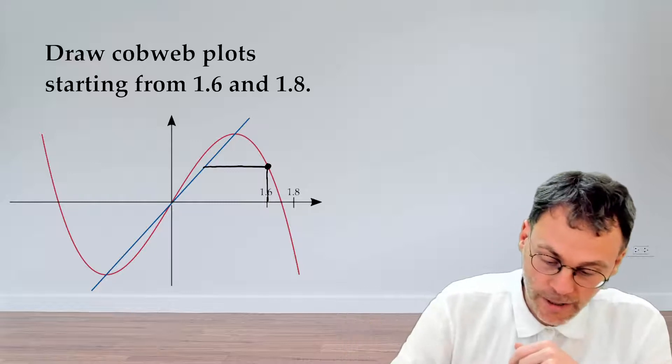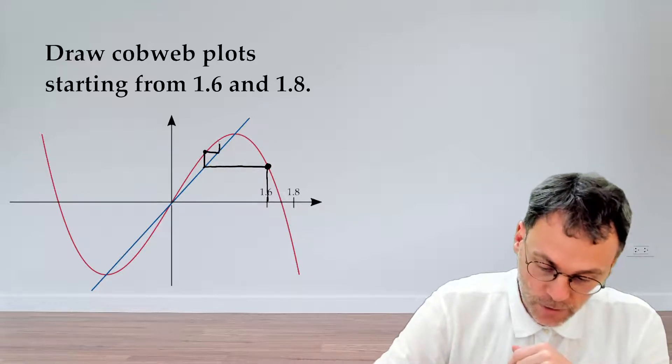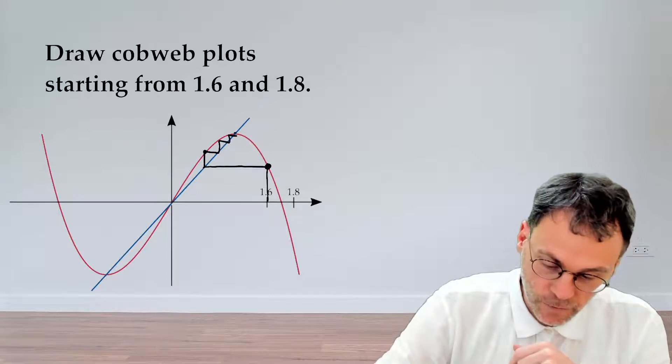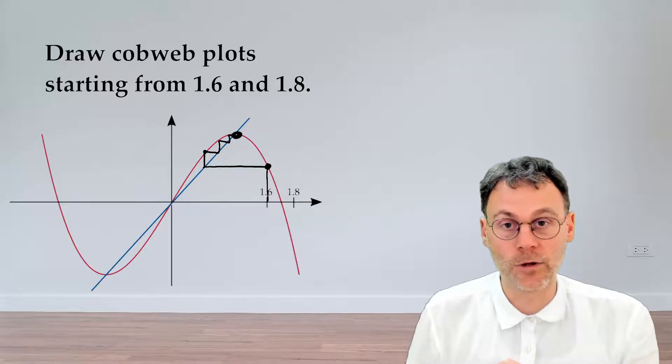Then we can keep applying f to that input, turning output back to input, and so on until we finally end up over here. So this is the orbit of 1.6.